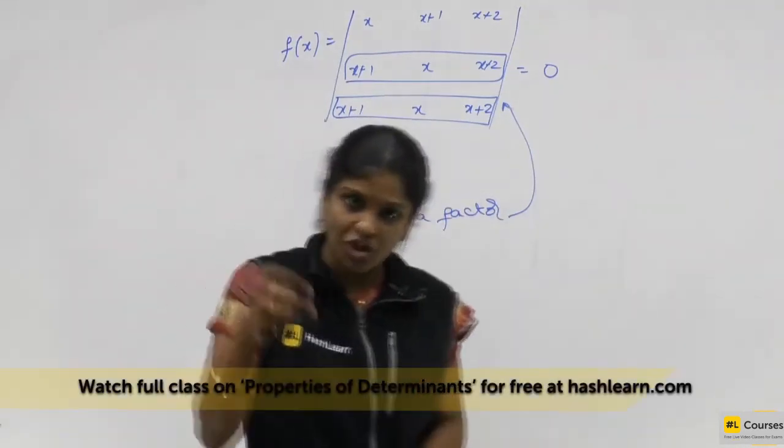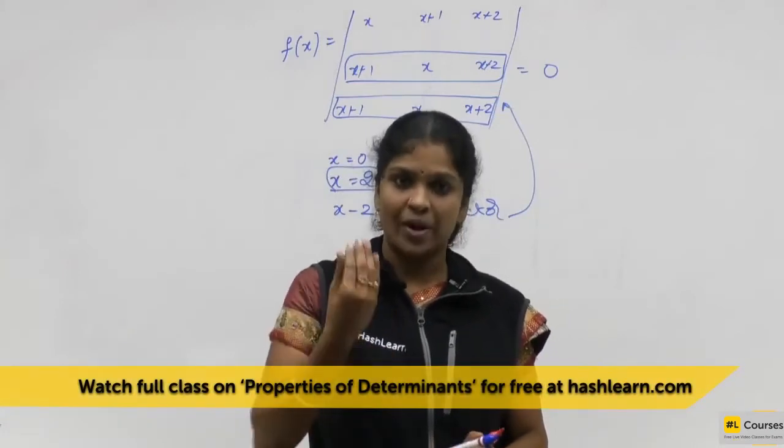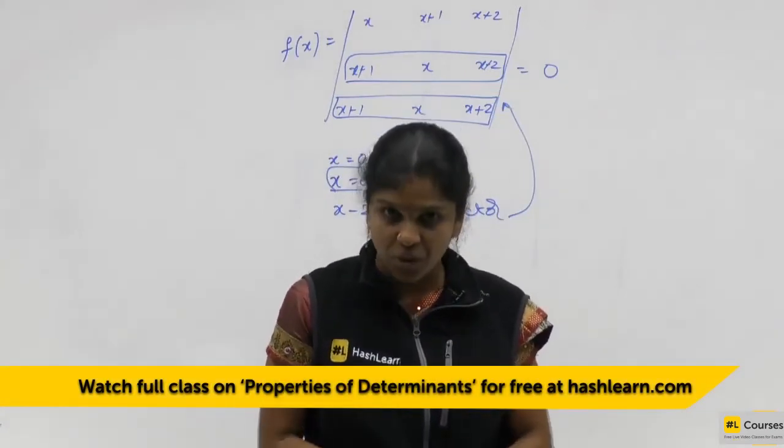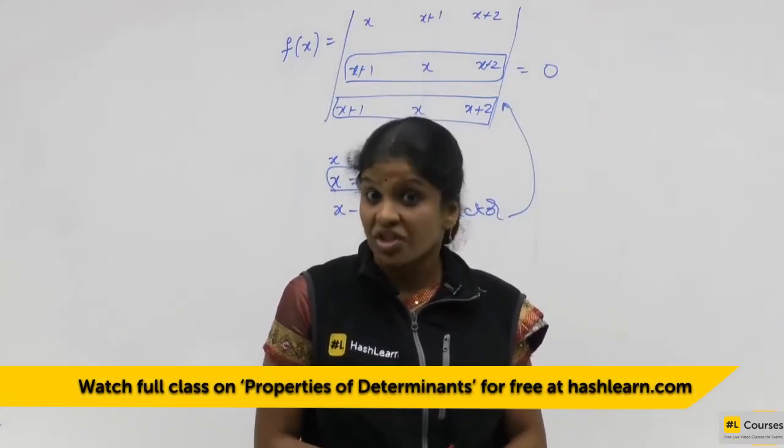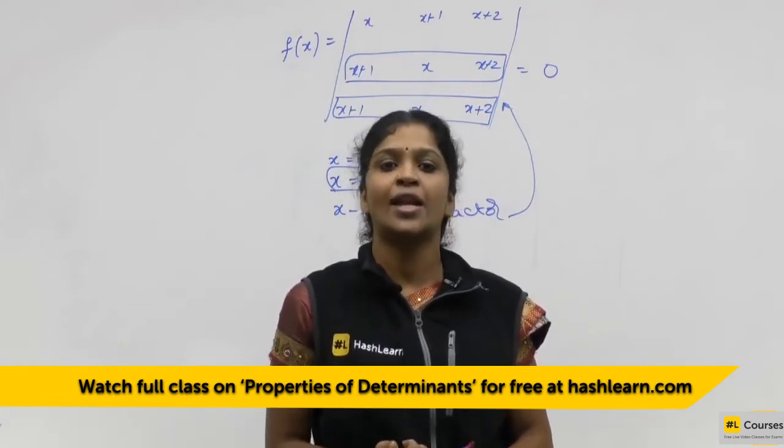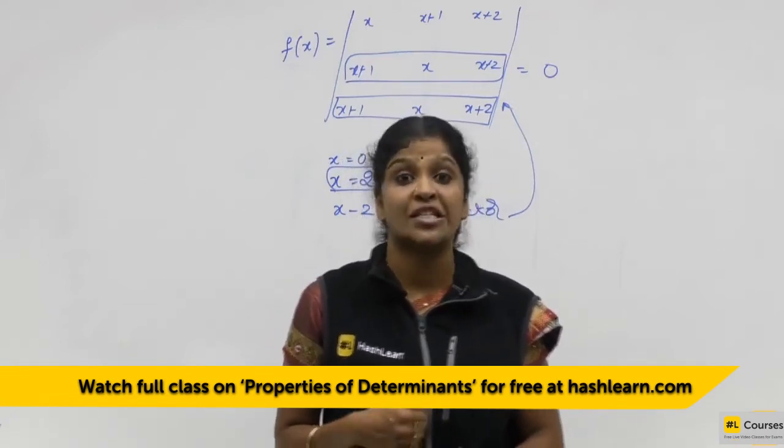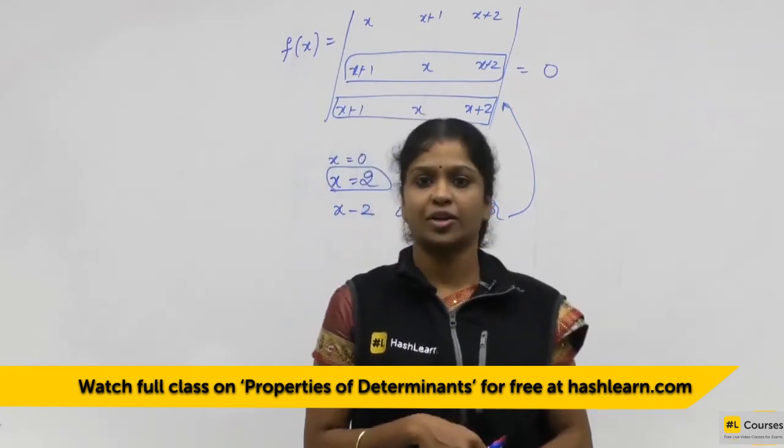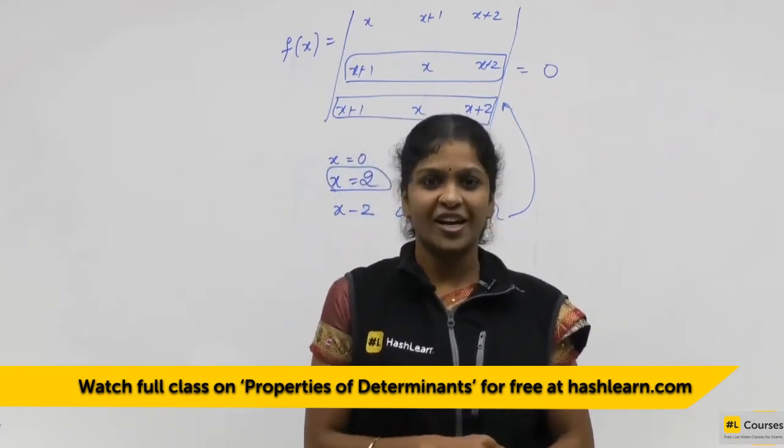So at that time you have to check with the options one by one. You should substitute in the determinant and check for what value the given determinant is becoming 0. That will be a factor for the given determinant. Clear right?